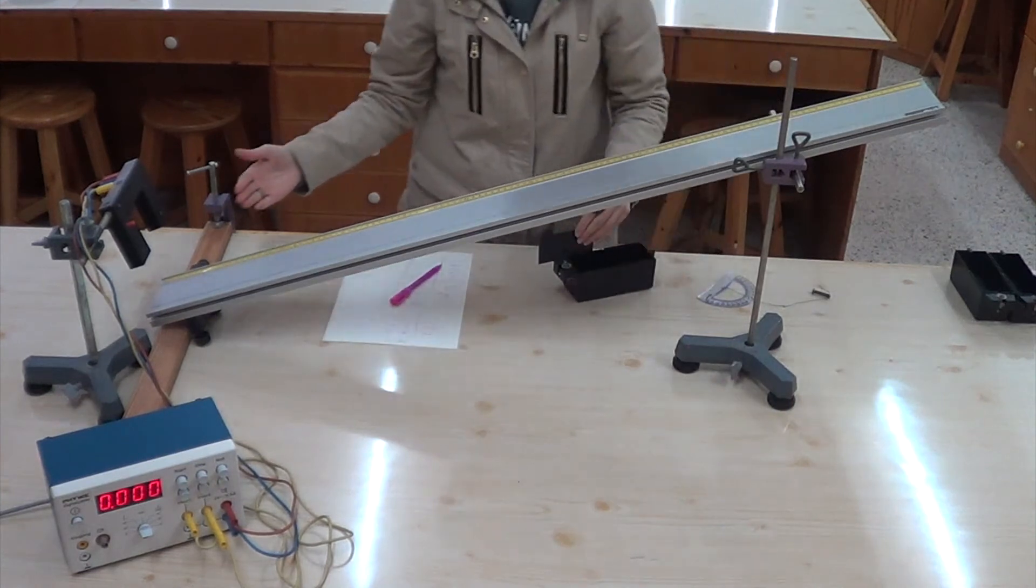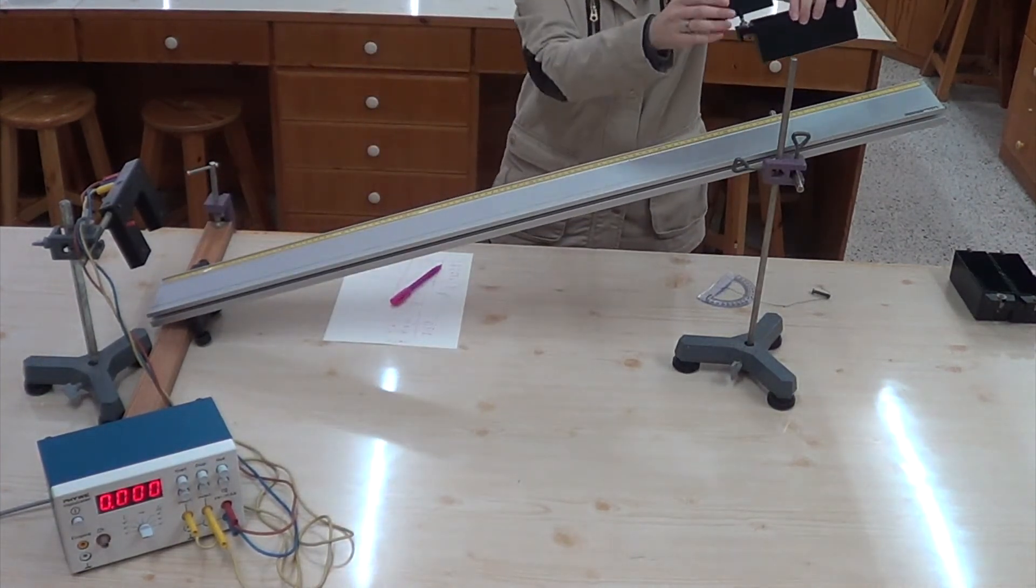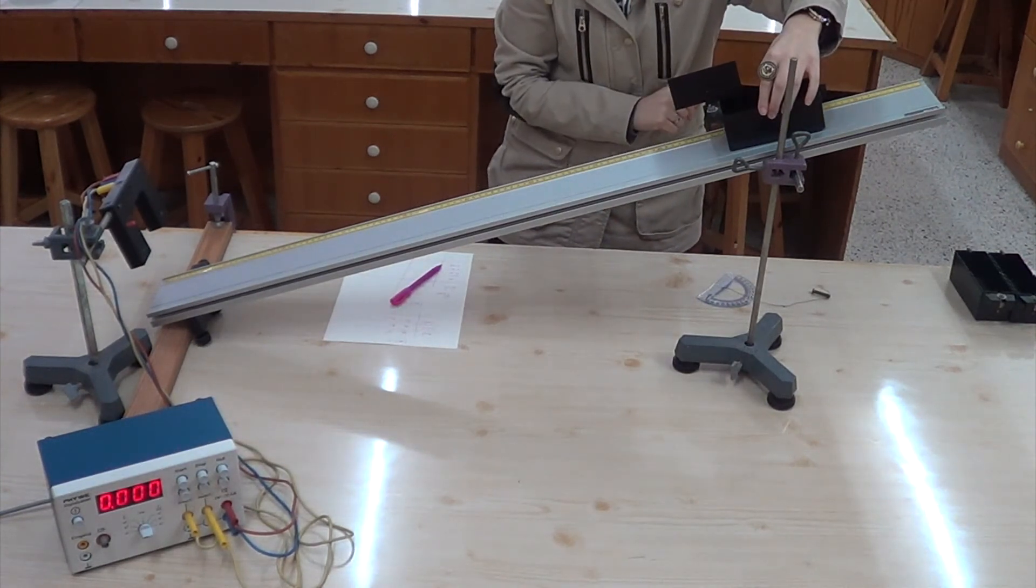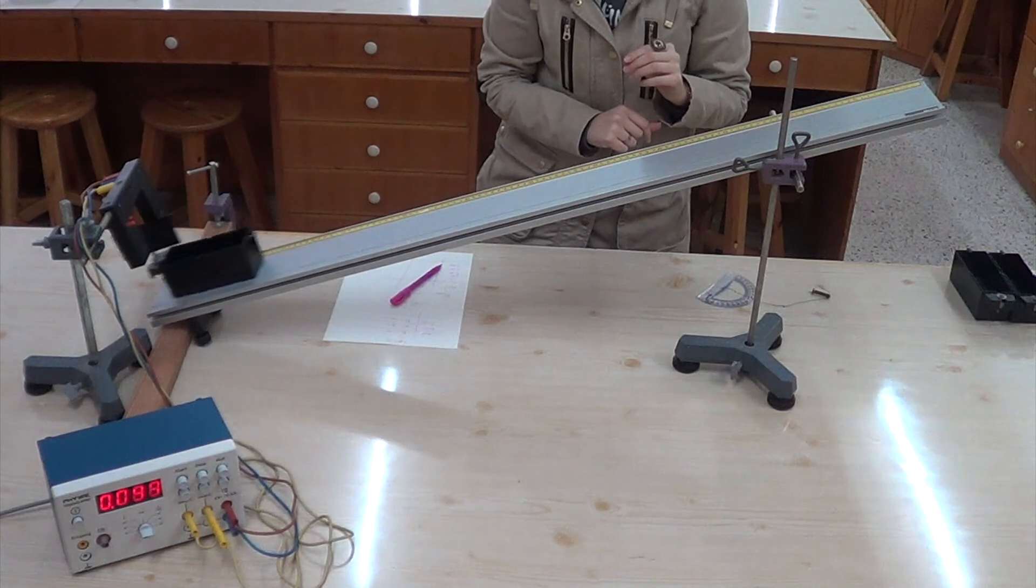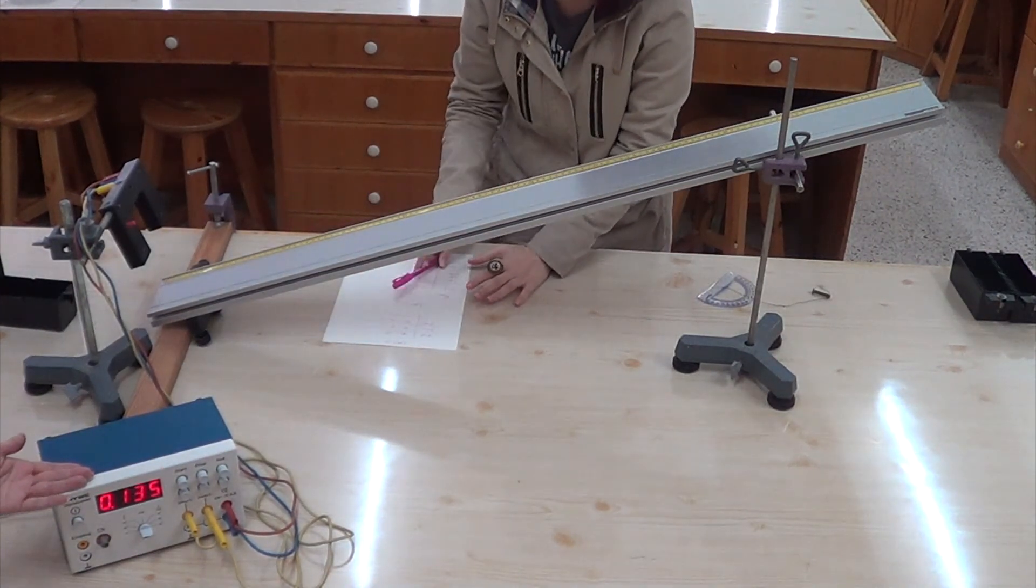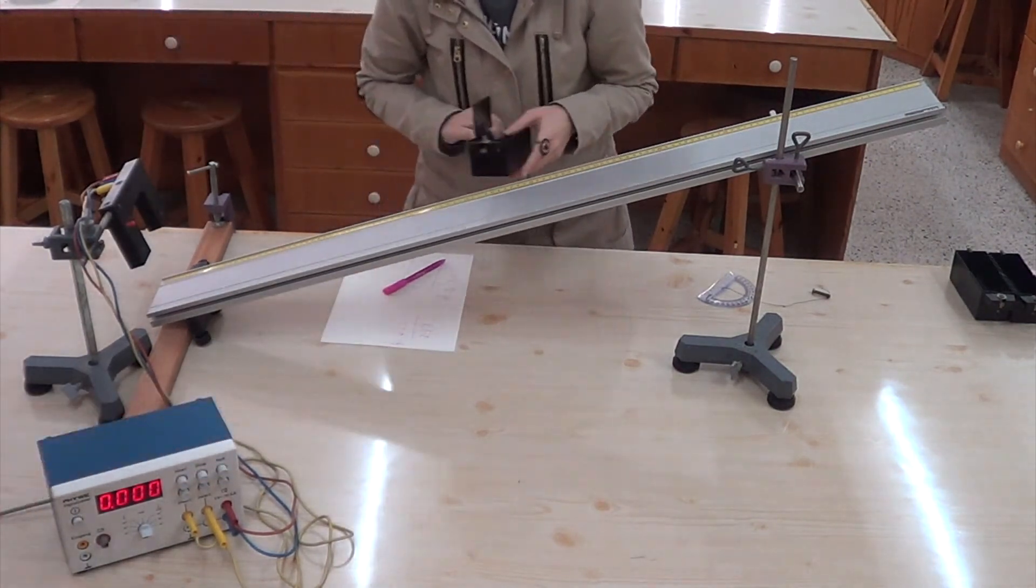Press null again and this time move 80 centimeters backwards from the reference point. Record the new time value and repeat the same procedure for the rest of the requested distance values.